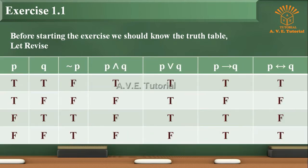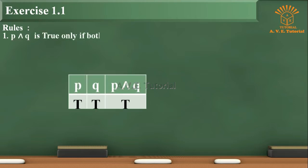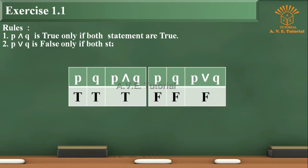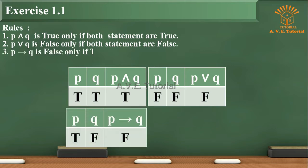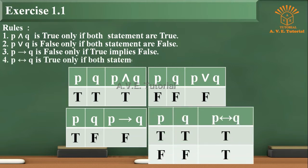Let's see everything in one table. Before starting the sum let's see some rules of truth tables. Rule 1: P and Q are true only if both statements are true. Rule 2: P or Q is false only if both statements are false. Rule 3: P implies Q is false only if true implies false. Rule 4: P biconditional Q is true only if both statements are the same.